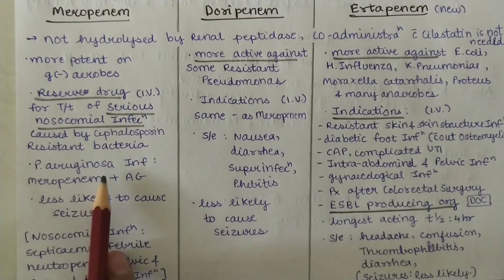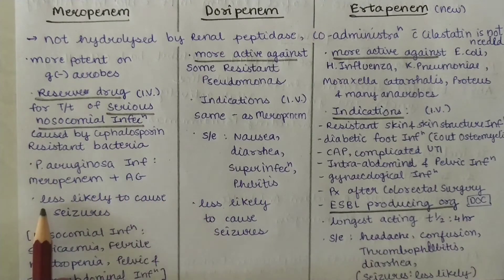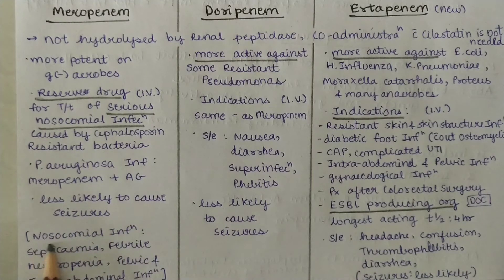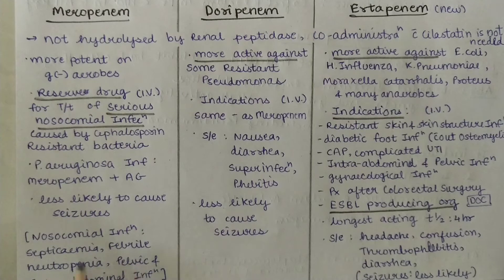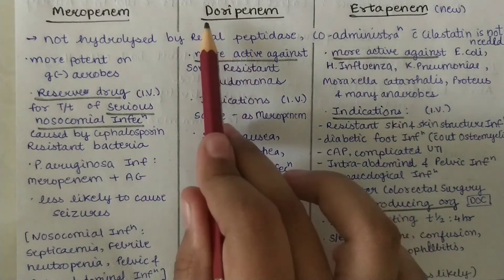For Pseudomonas aeruginosa infection, Meropenem plus aminoglycosides is preferred. It is less likely to cause seizures. For nosocomial infections like septicemia, febrile neutropenia, pelvic, and intra-abdominal infections, Meropenem is given.